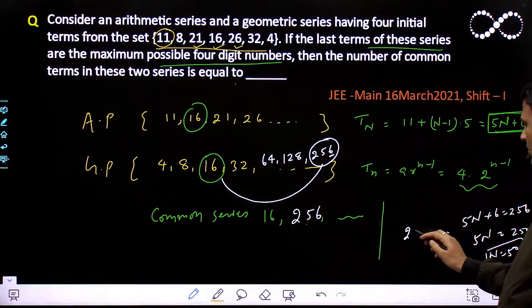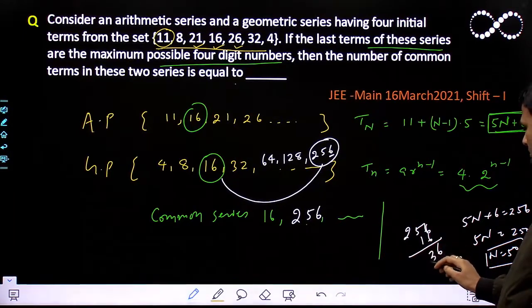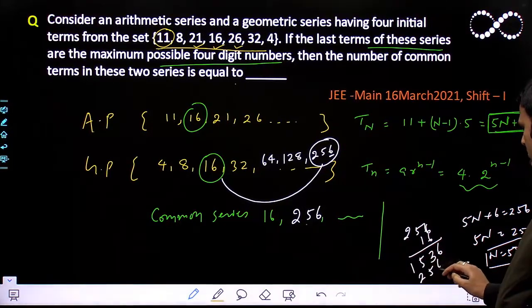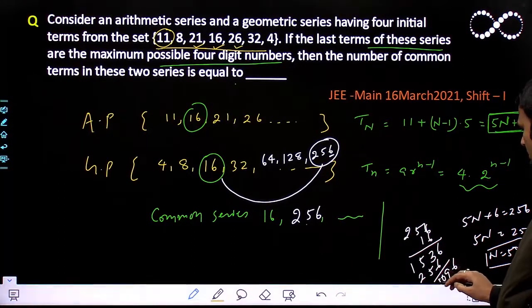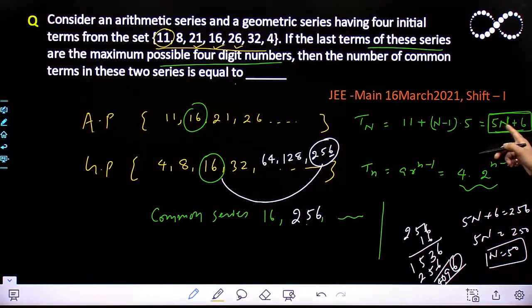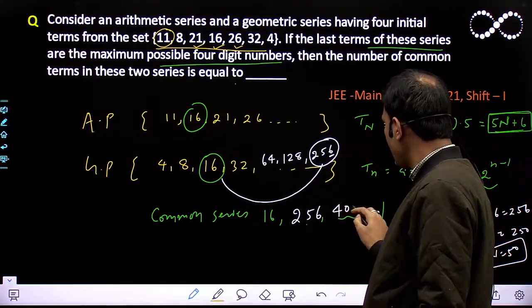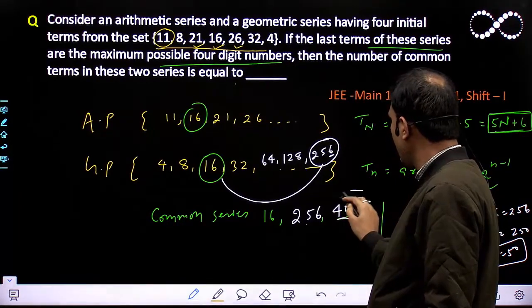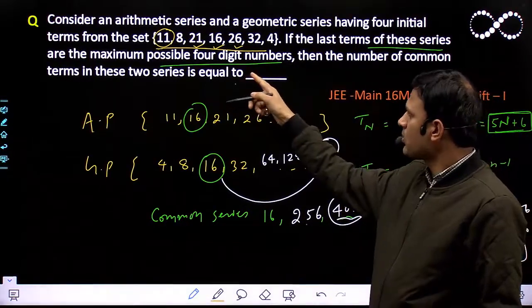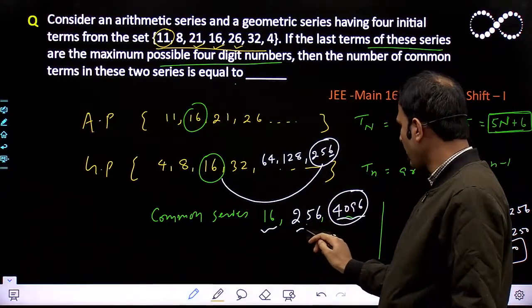Obviously this GP series will continue. After 16 comes 256. What's next? 256 × 16 = 4096. So 4096 has last digit 6. Obviously if 5N + 6 = 4096, then N will be a natural number. So we can say 4096 comes, and this is our four-digit last term of the series.